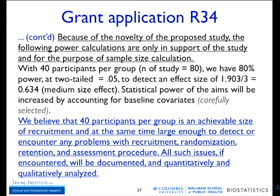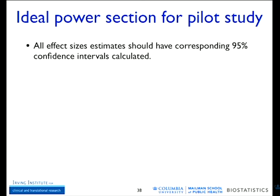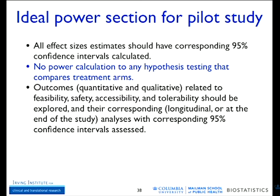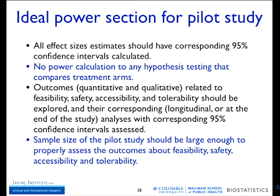What the ideal power section for a pilot study should contain: everything estimated with 95% confidence intervals, no p-values, no power calculation because the pilot study will be underpowered by definition. Outcomes should address safety, feasibility, acceptability, and tolerability, with 95% confidence intervals. Sample size of the pilot study should be large enough to assess those outcomes — nothing else.